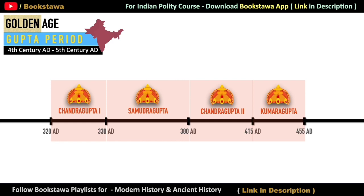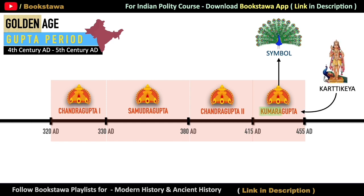Kumar Gupta had the peacock as his symbol. The thing to note here is that Lord Kartikeya is also addressed by the name of Kumar, and his symbol is also the peacock. So Kumar Gupta was either inspired by Lord Kartikeya or wanted to portray himself as him.